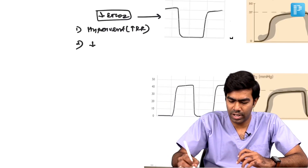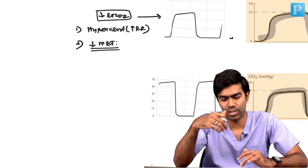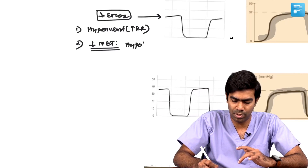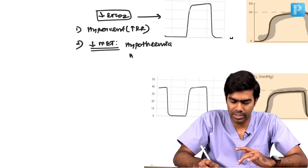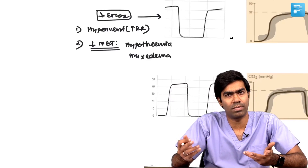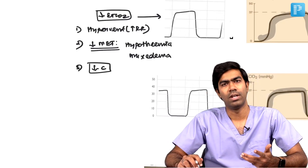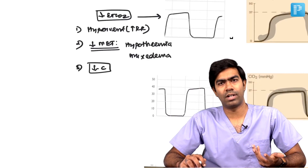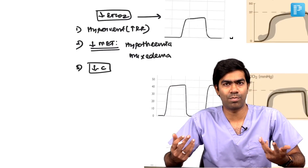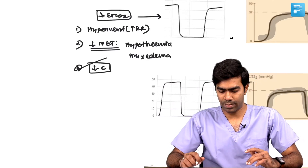Number two is reduced metabolism. There are three things affecting EtCO2: circulation, metabolism, and ventilation. Conditions that produce reduced metabolism include hypothermia and myxedema — severe hypothyroidism. Number three is reduced circulation: conditions that produce reduced perfusion like pulmonary embolism, cardiogenic shock, cardiac arrest, or increased intraalveolar pressure from high PEEP and very high positive pressure ventilation — all these can produce reduced circulation, resulting in low EtCO2.